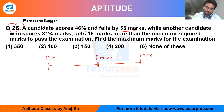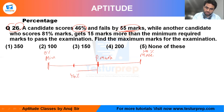The candidate scored 46 percent and failed by 55 marks — so 46 is placed here, and the gap between 46 and the passing marks is only 55 marks. After that, another candidate scored 81 percent, which is 15 marks more than the passing marks.